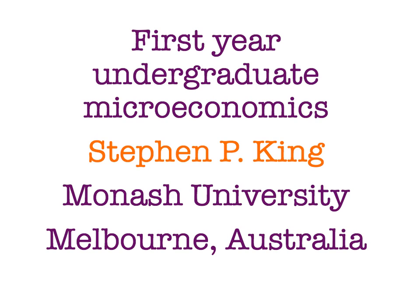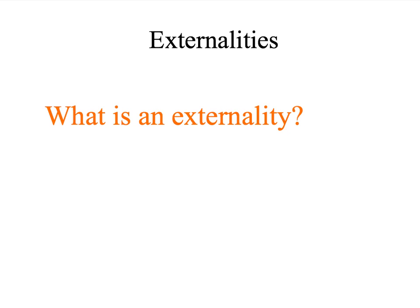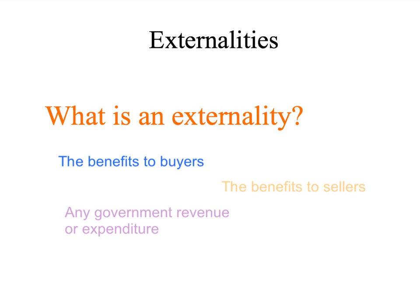Hi, and welcome back to first-year undergraduate microeconomics. So far, when we've been looking at the surplus created by transactions, we've looked at the benefits to buyers, or what we've called consumer surplus, the benefits to the sellers, or what we've called producers' surplus, and any government revenue or expenditure. But in our tables, we've had one other category. That other category is costs or benefits from market transactions that affect people outside the market. That's what we're now going to turn our attention to. In this presentation, we will introduce the idea of externalities.